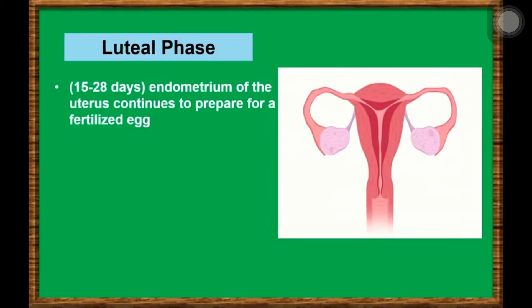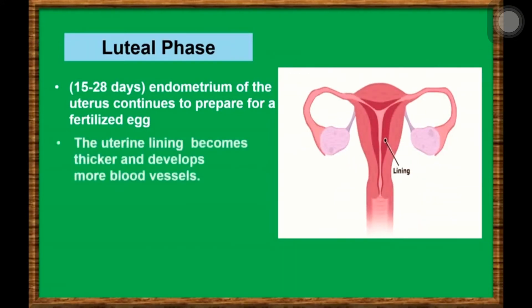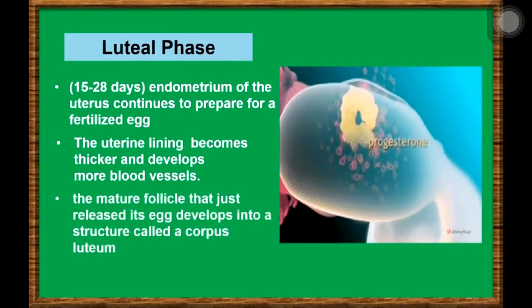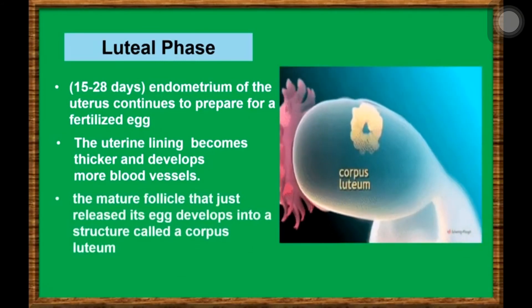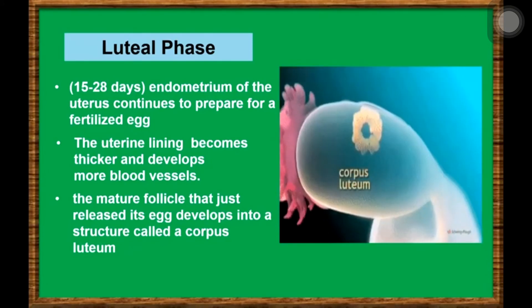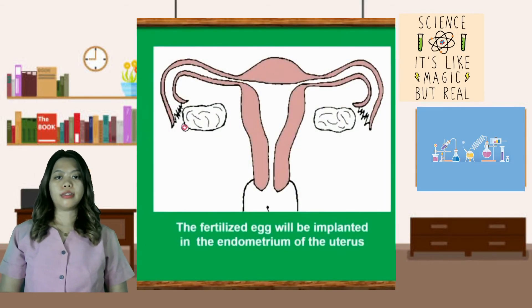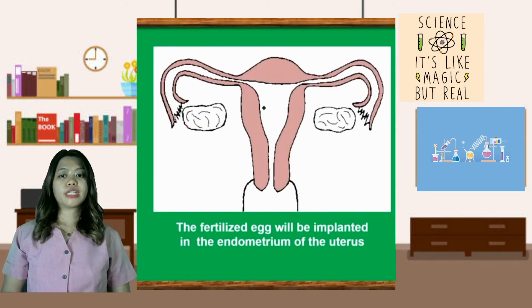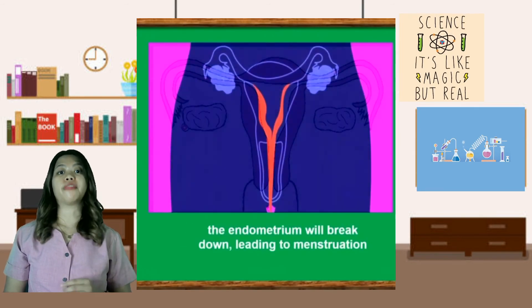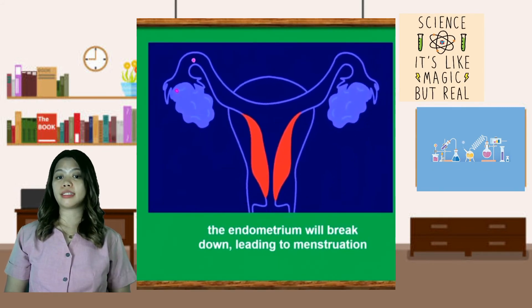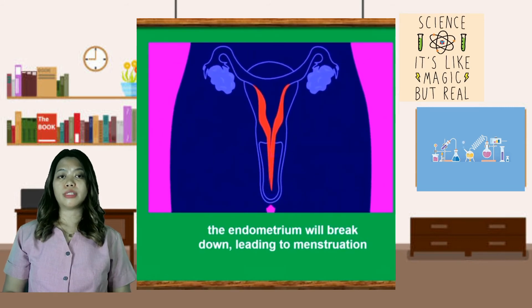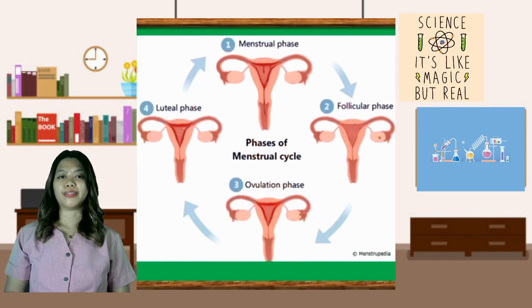Following ovulation, the luteal phase begins. During the luteal phase, the endometrium of the uterus continues to prepare for a fertilized egg. The uterine lining becomes thicker and develops more blood vessels. At the same time, the mature follicle that just released its egg develops into a structure called the corpus luteum. If the egg cell is fertilized by a sperm cell, the fertilized egg will be implanted in the endometrium of the uterus. But if the egg cell is not fertilized, the endometrium will break down, leading to menstruation, and this begins a new cycle.